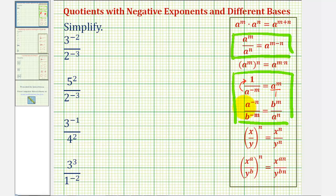It follows that a to the power of negative n divided by b to the power of negative m — notice how the bases are not the same — but if we move a to the power of negative n down to the denominator, and we move b to the power of negative m up to the numerator, it changes the sign of the exponent. This is equal to b to the power of m divided by a to the power of n.